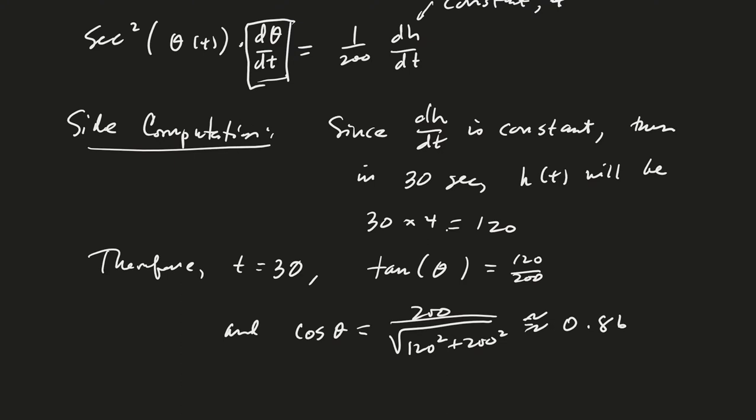Okay, and so now remember that secant is 1 over that, and so we have 1 over 0.86 squared times dθ/dt is equal to 1 over 200 times dh/dt, which is 4.